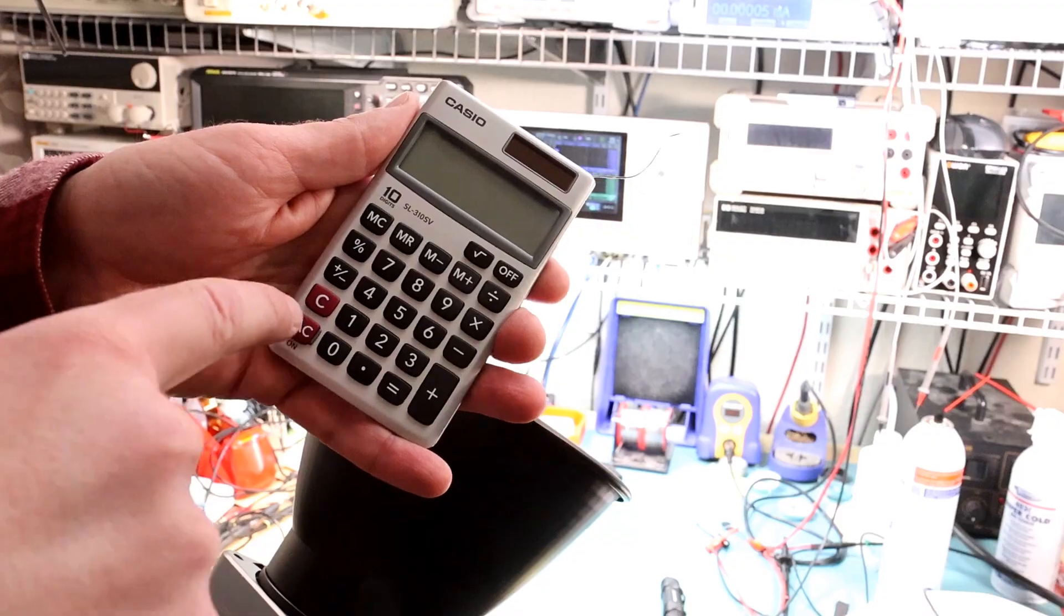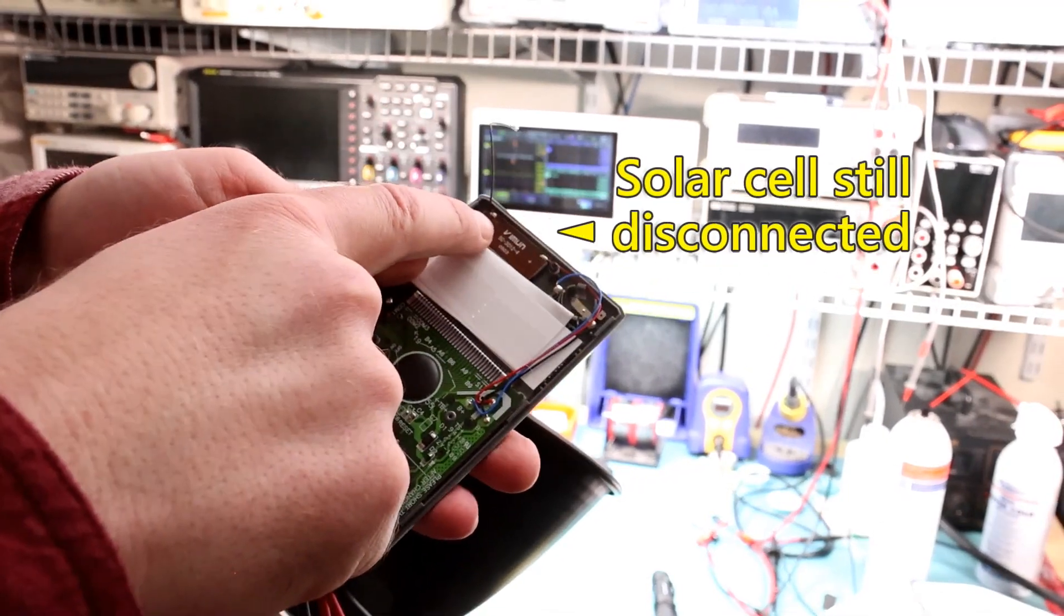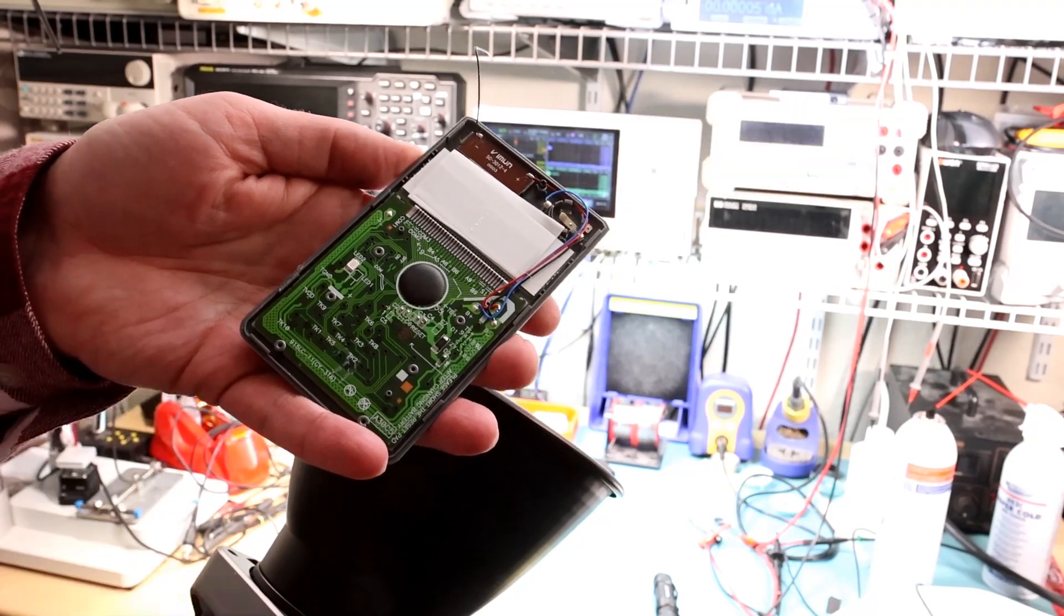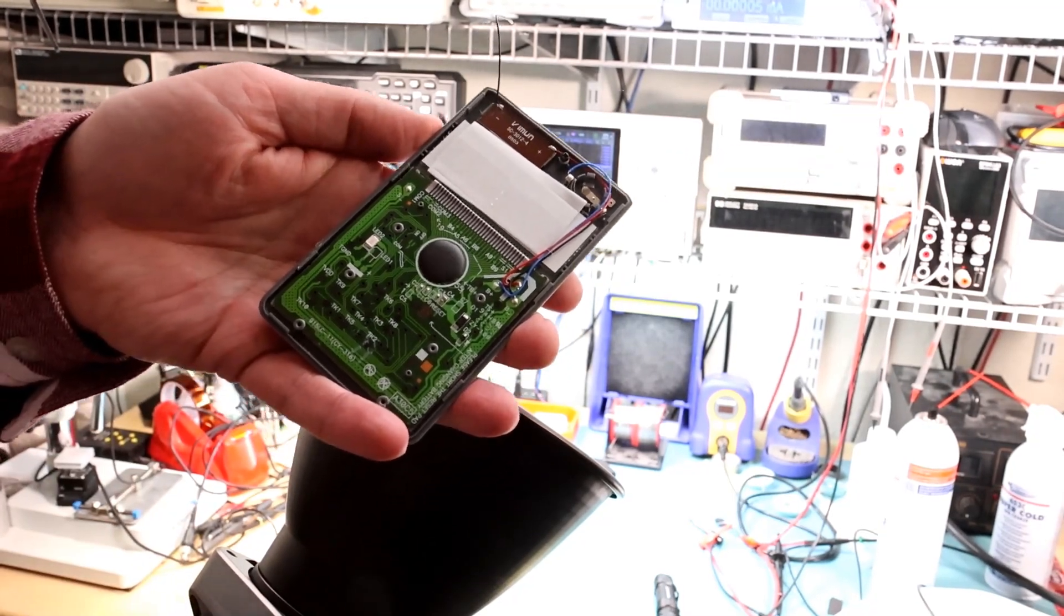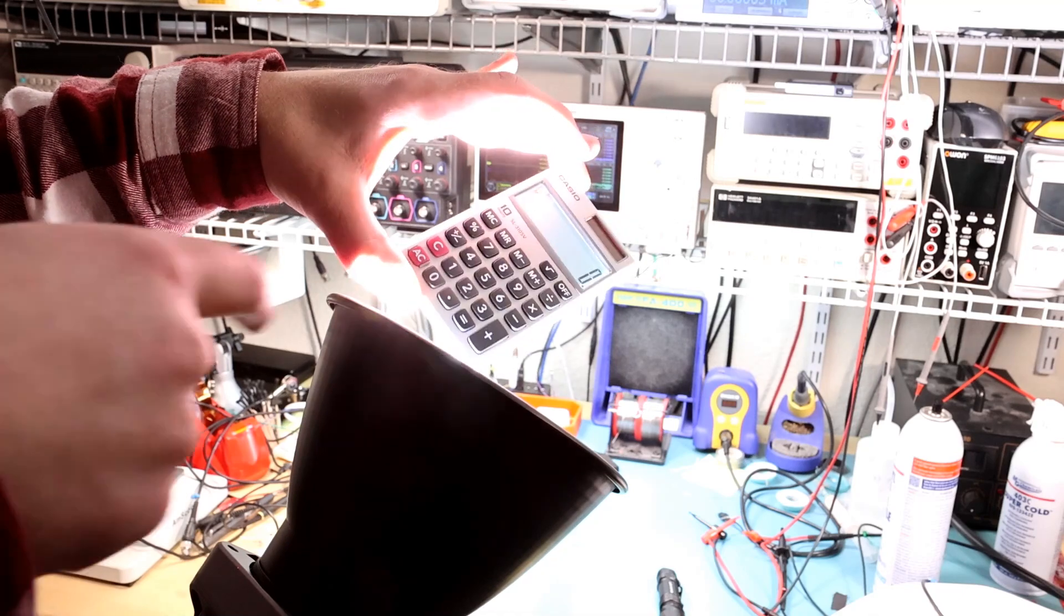And remember that solar calculator from before? Well, with enough light, even with the solar cell disconnected and the battery still absent, we can power the calculator from a single tiny red LED that happens to come on its board, normally hidden by the case. Yep, we can actually generate the 2 microwatts or so that this calculator requires solely from that tiny little LED on the back. Amazing!